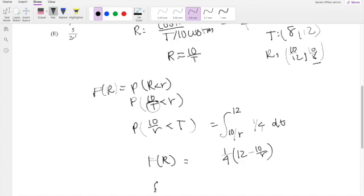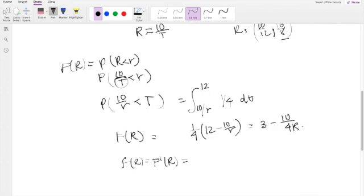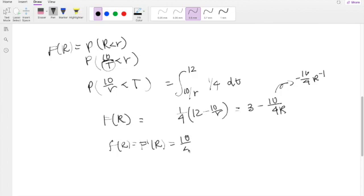Which is exactly just the derivative of F(R). So taking the derivative here, you get one fourth. I'm actually going to simplify this a little bit first. 12 over 4 is 3 minus 10 over 4R. So taking the derivative here, this is essentially the same thing as 10 over 4 times R to the negative 2.